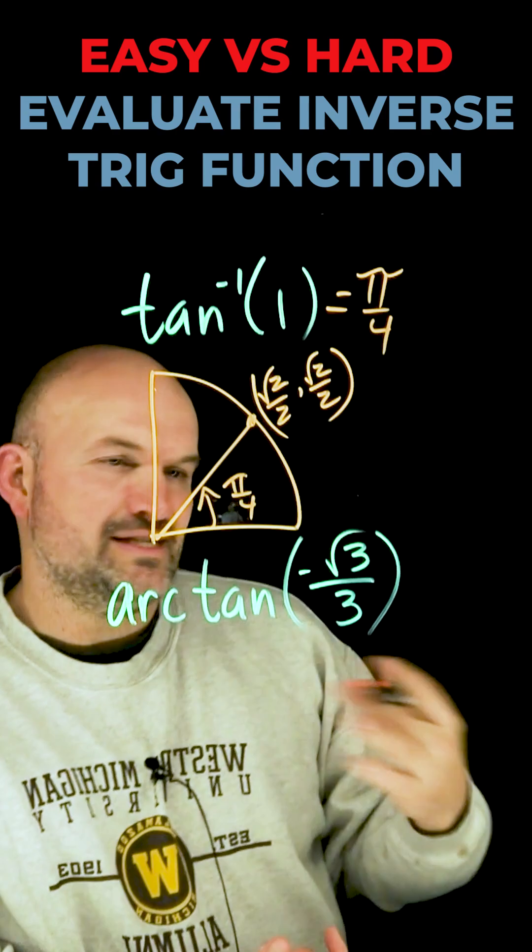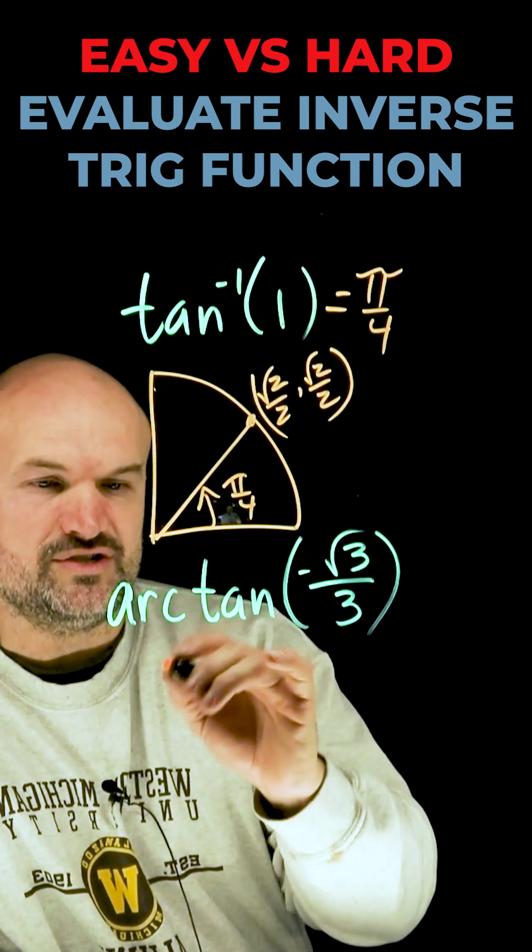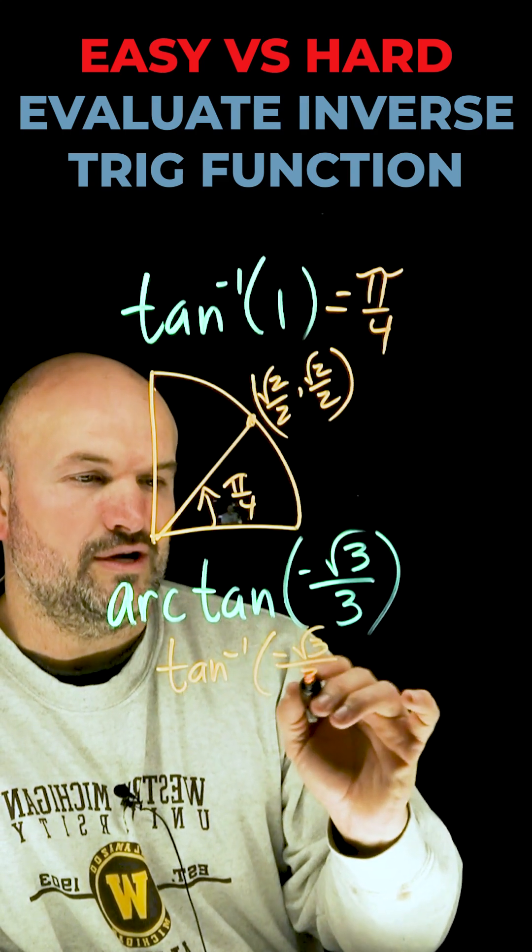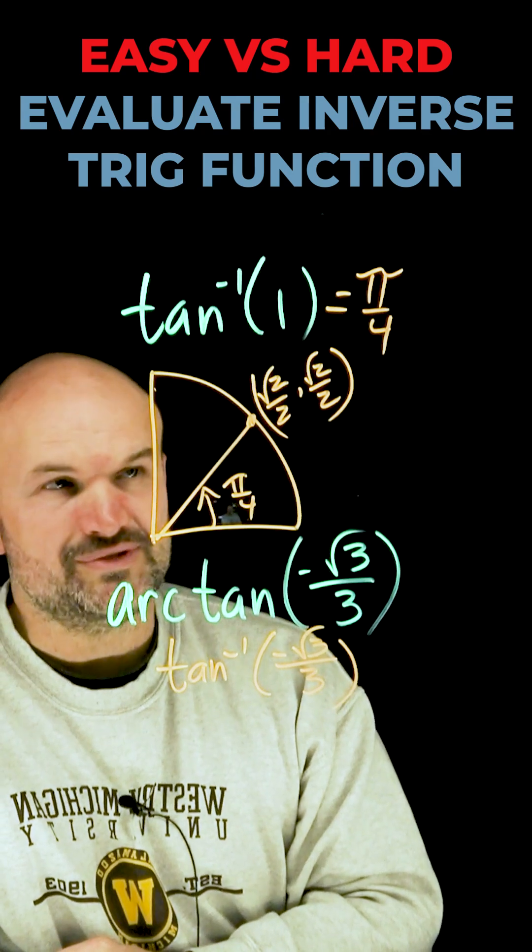Now the next example gets confusing for a couple ways. One, introducing arctan, which is really the exact same thing as tangent inverse of negative square root of 3 over 3. So we don't need to be confused on that part.